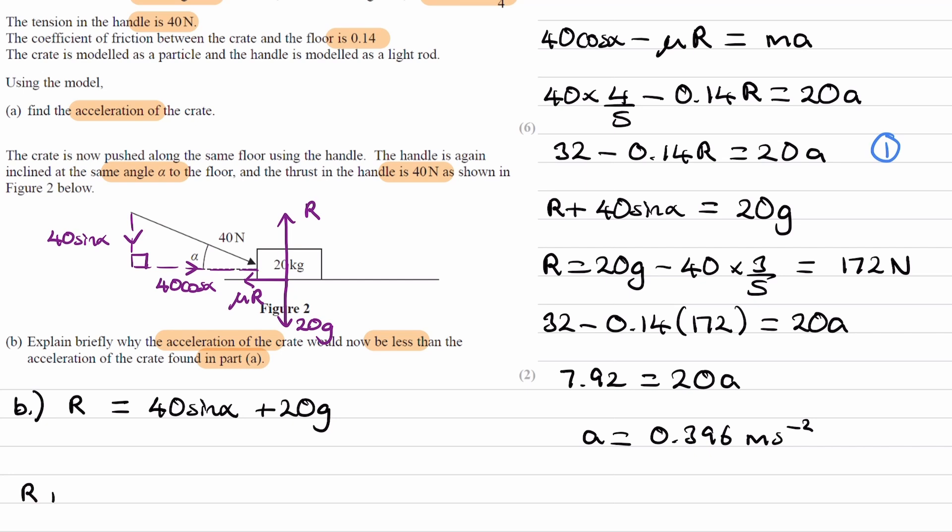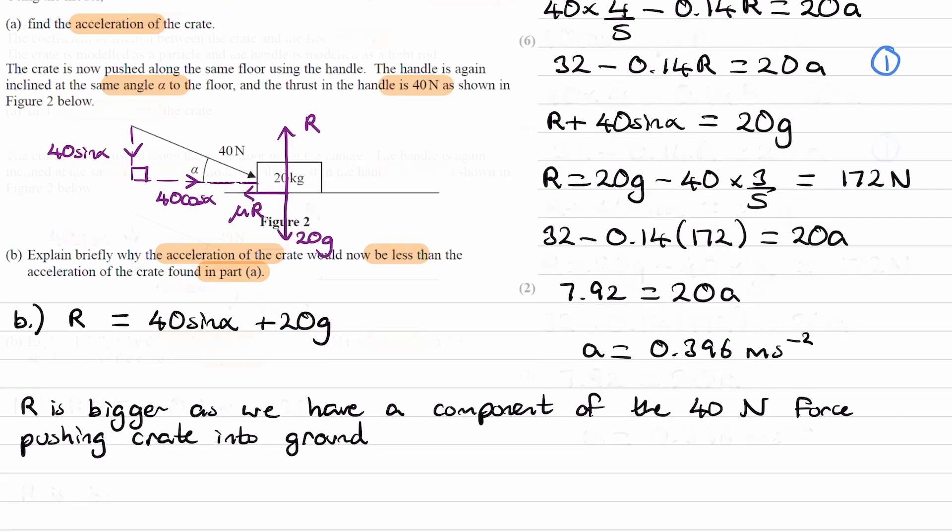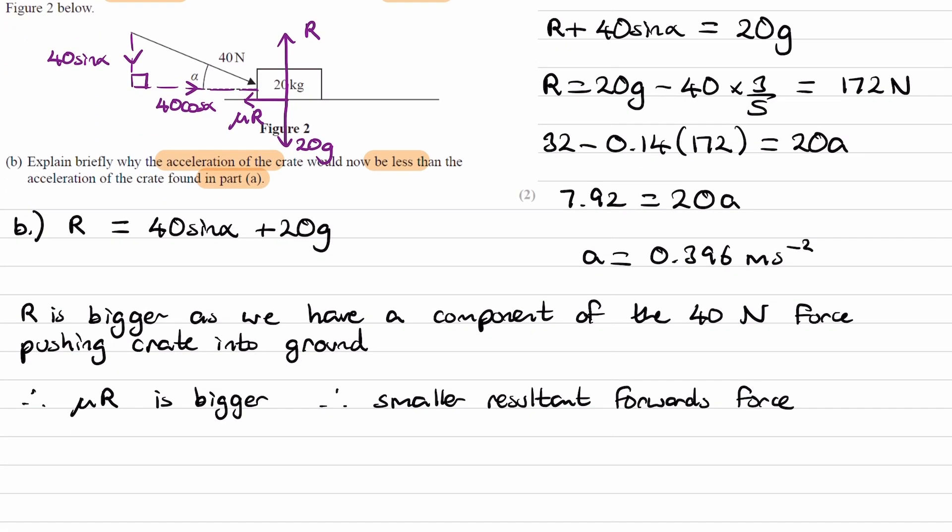So this means that R is bigger, as we have a component of the 40 newton force pushing the object into the ground. If R is bigger, that means that μR is bigger. μR is the frictional force. If R is bigger, μR is bigger as well. That means we have a smaller overall forwards force. If the backwards force is bigger and the forwards force is unchanged, we have a smaller resultant force. And if we have a smaller resultant forwards force, we will have less acceleration, as F equals Ma, where F is the resultant force.